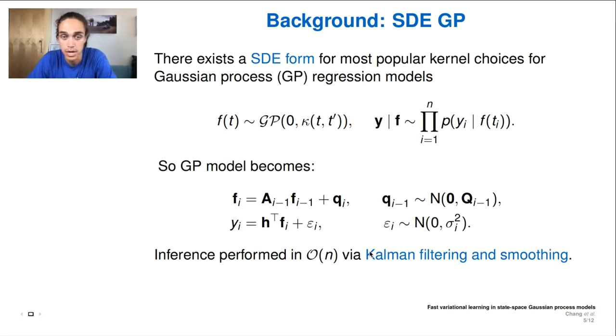exactly if the likelihood is Gaussian. And the inference turns from a cubic operation in the number of data points to a linear operation via Kalman filtering and smoothing. But as we said, this is exact when we have Gaussian likelihoods. But when we have non-Gaussian likelihoods, this no longer becomes obvious how to perform the SDE GP-type model.